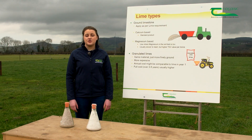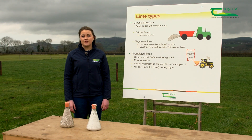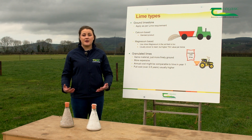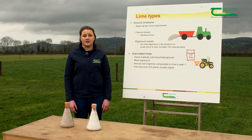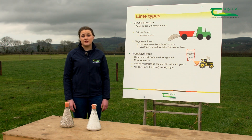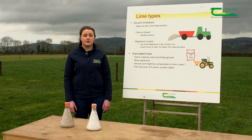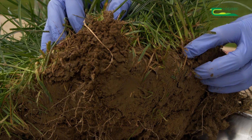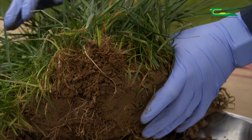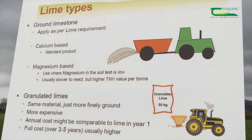pH plays a major role in soil fertility and is often considered the master variable, as it unlocks and locks up different elements within the soil. Having the correct pH for mineral soils at 6.3 to 6.5 is very important. It increases microbial activity, increases earthworm count, helps the release of nutrients from chemical and organic fertilizer, and is important for the recycling of nutrients.